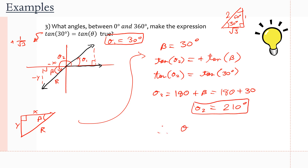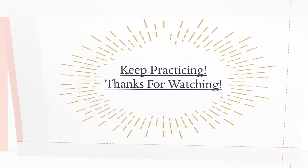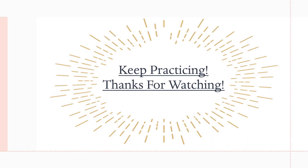So the θ values that make tan(30°) = tan(θ) true are θ = 30° or θ = 210°. That's our final answer. Thanks so much for watching — I hope these examples were useful. Go to the textbook and do the questions from the chapter outline in the theory video, and I'll see you in the next theory video.